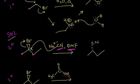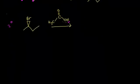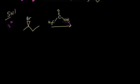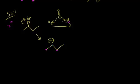In an SN1 mechanism, the first step is formation of the carbocation. The electrons kick off onto the bromine to form a secondary carbocation on this carbon, giving it a +1 formal charge. Secondary carbocations have the possibility of rearranging, but in this case there's nothing that could rearrange to make a more stable tertiary carbocation, so it stays as a secondary carbocation. Always think about rearrangements as being possible in an SN1 mechanism.